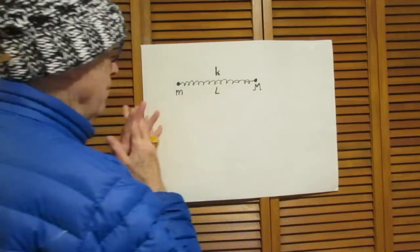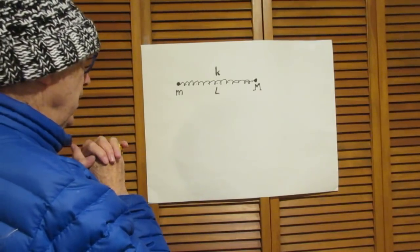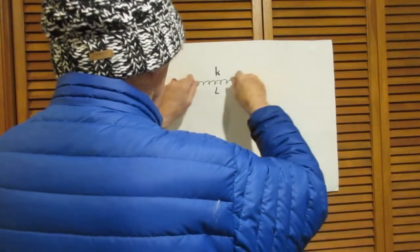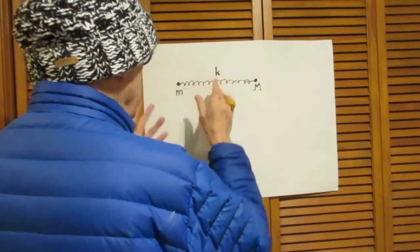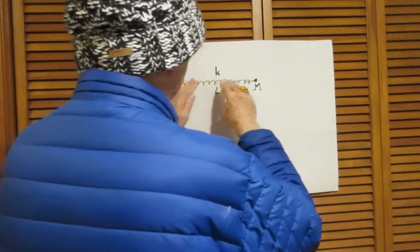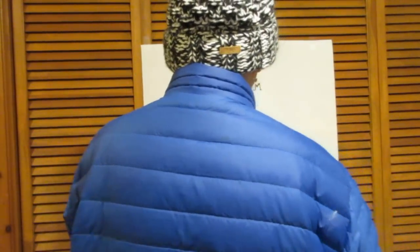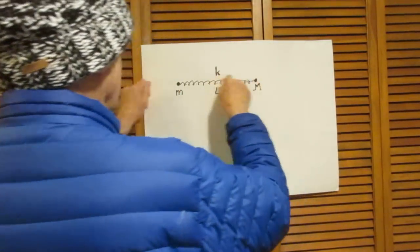This system has what we call a resonance frequency. A resonance frequency would mean that the spring is oscillating like this. It doesn't mean that it has to be standing still. You could even give it a little push and it could move like this. It would still then oscillate like this. Or it could go in the other direction and still oscillate like this.